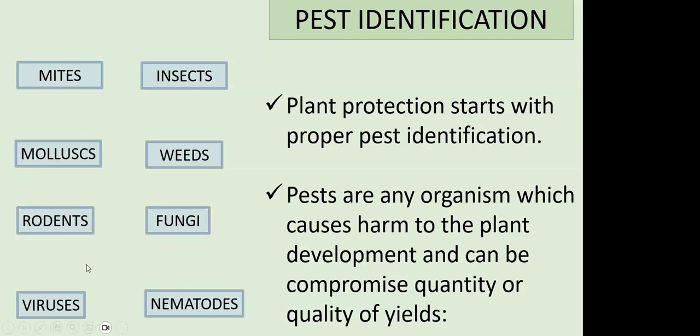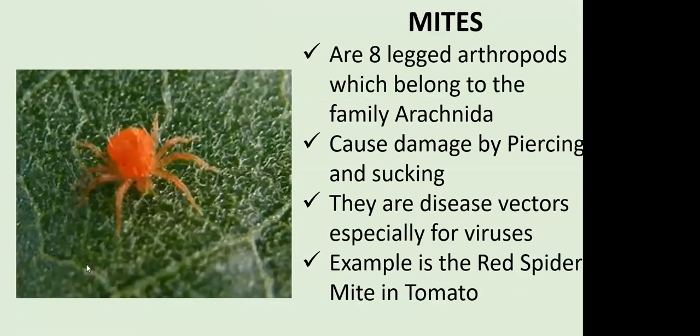The first kind of pests we might encounter are mites — eight-legged arthropods belonging to the family Arachnida. They mostly cause damage by piercing and sucking on plants. You will mostly find them aligned along the veins of the plant where they do the sucking. The plant is actively generating nutrients, but the mites will be feeding on them, causing the plant not to grow in a normal way.